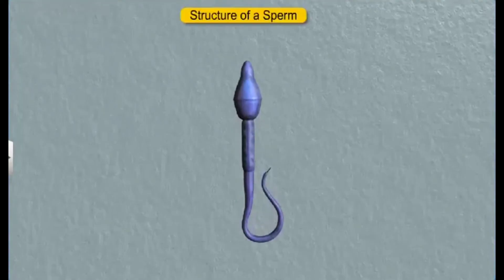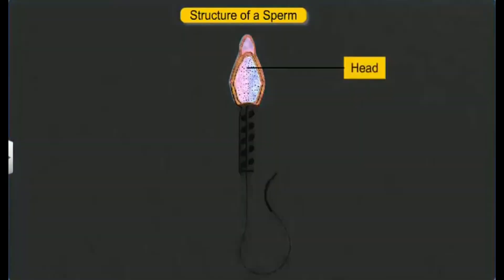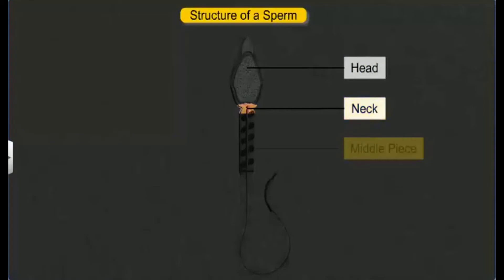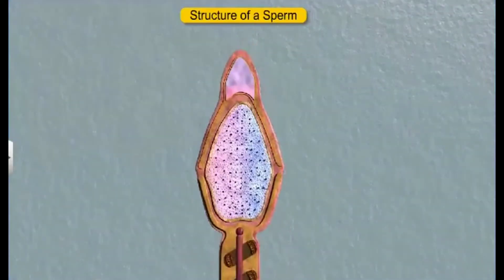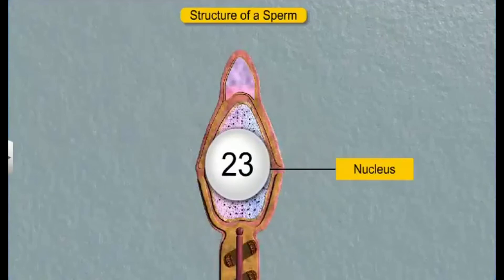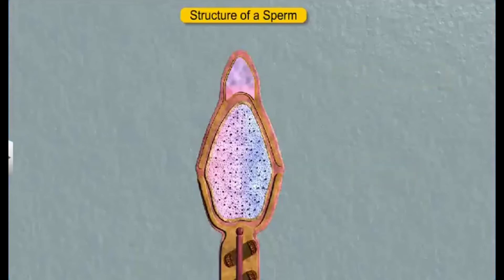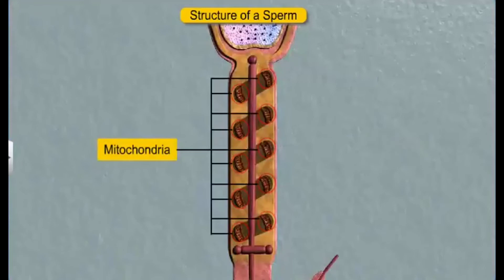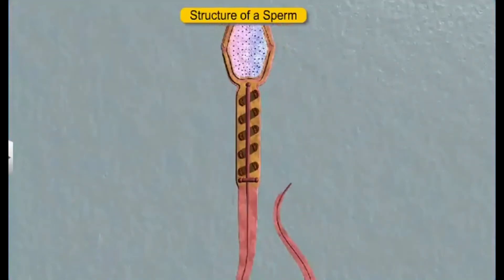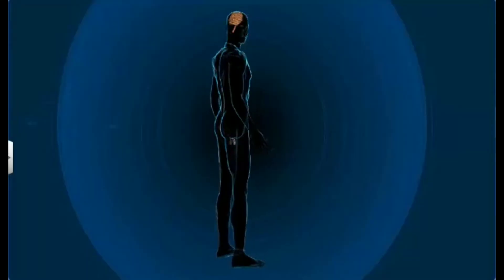Did you know the semen released during a single ejaculation contains 200 to 300 million sperms? Microscopic studies have revealed that a typical sperm is covered by a plasma membrane and has four distinct parts: a head, neck, a middle piece, and a tail. Inside the head lies an elongated haploid nucleus containing chromosomes. The interior part of this nucleus is surrounded by an acrosome, a cap-like structure filled with enzymes that help fertilization. The sperm's neck and middle piece are filled with mitochondria.